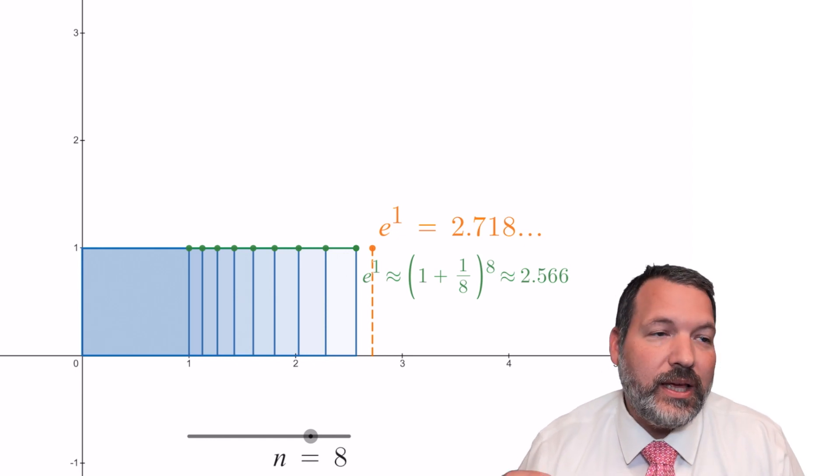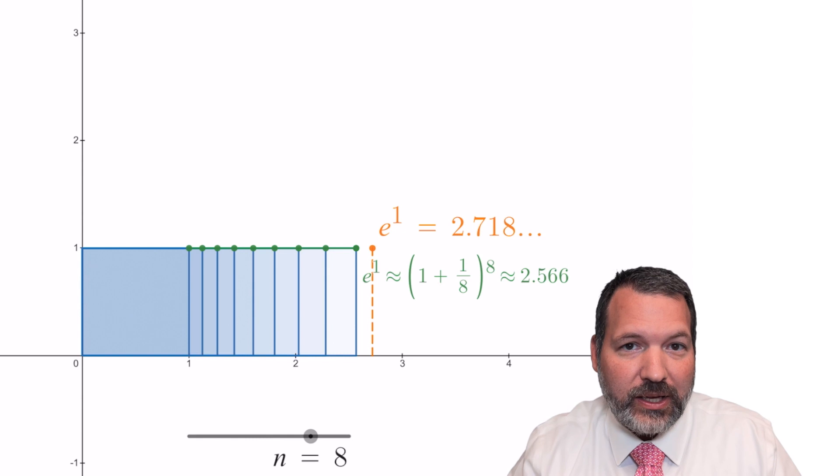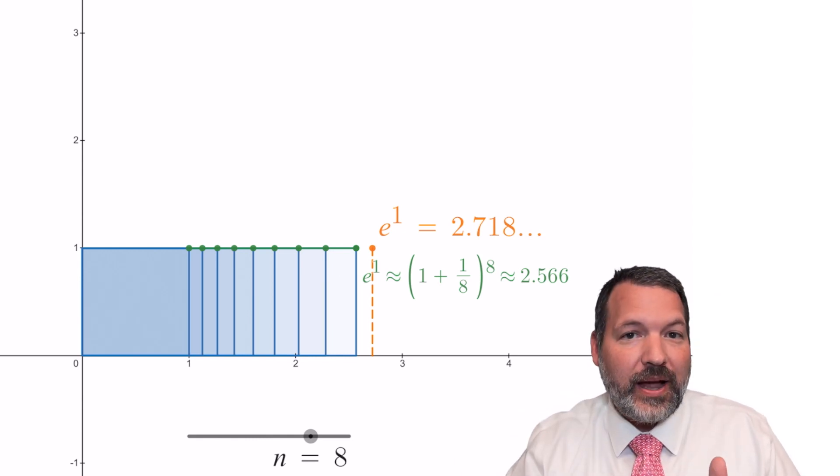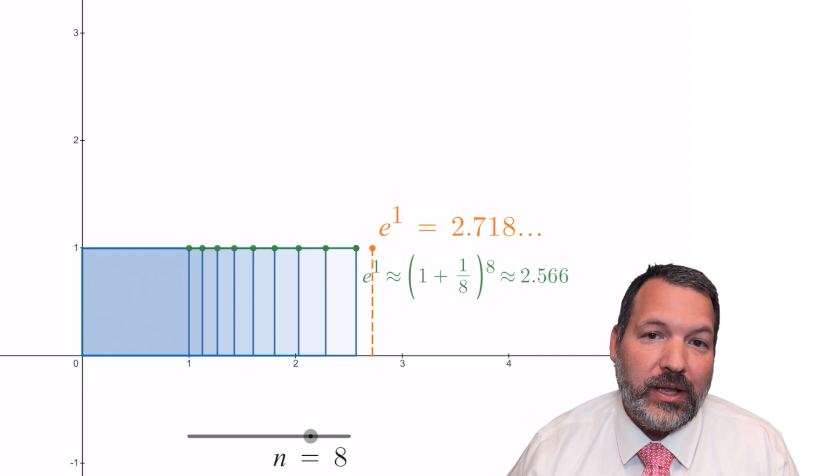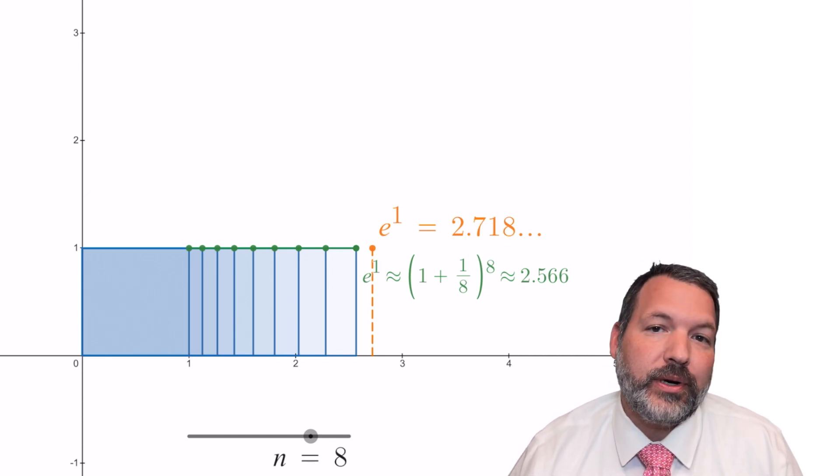The idea that if you did check in infinitely many times throughout the year, slicing that dollar that the bank is going to give you into infinitely tiny slices, but then adding them back in the entire time so that you earn interest on those infinitely many tiny slices, you max out at this special number E.